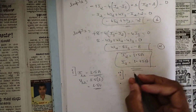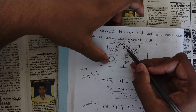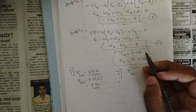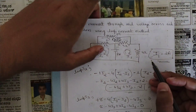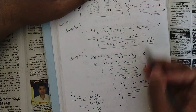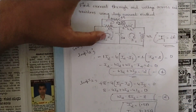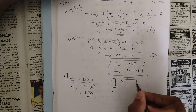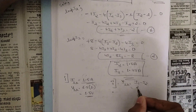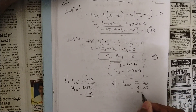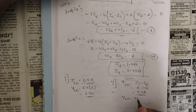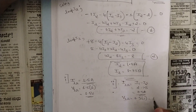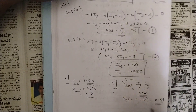For the second 1-ohm resistor (lower), it lies between loops i1 and i2. Since i1 is greater, the current is i1 − i2 = 2 − 1.5 = 0.5 ampere. Voltage across this resistor = 0.5 × 1 = 0.5 volt.